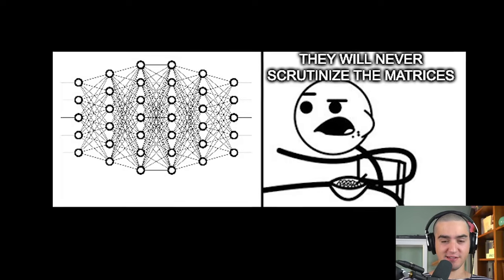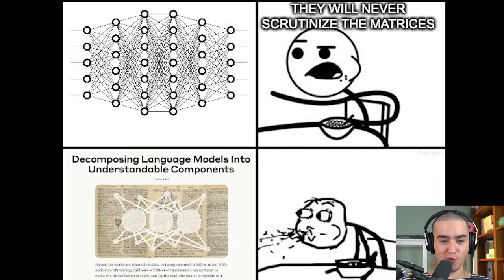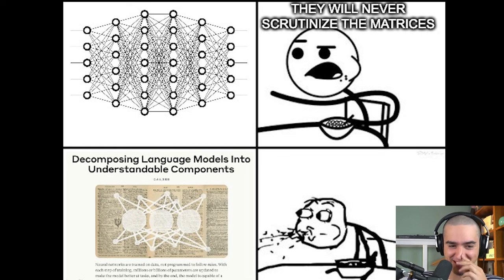They will never scrutinize the mattress, they say. Boom. New Anthropic paper. Decomposing language models into understandable components. Monosemanticity has been achieved internally. Take that, OpenAI.